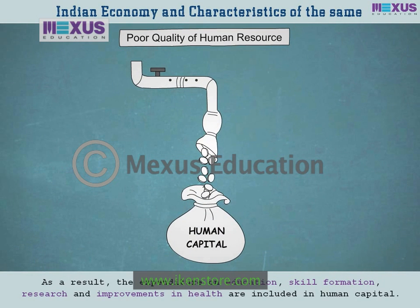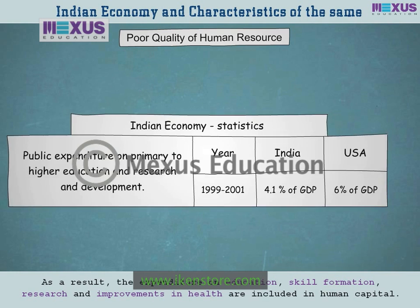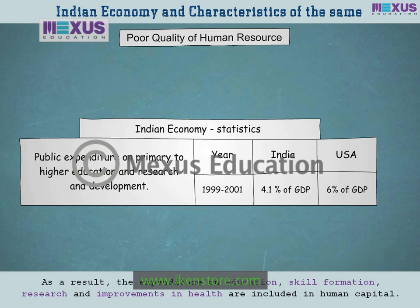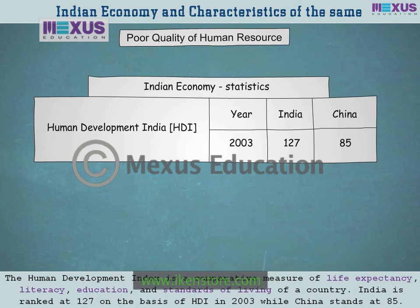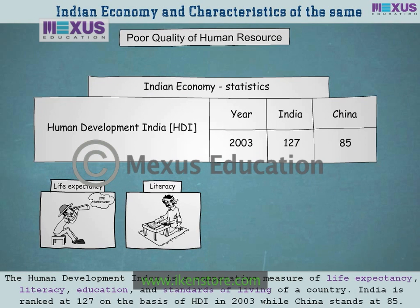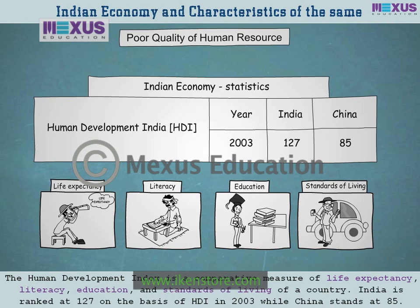As a result, the expenditure on education, skill formation, research and improvements in health are included in human capital. The Human Development Index is a comparative measure of life expectancy, literacy, education and standards of living of a country. A quick look at the statistics indicates a far from satisfactory situation.